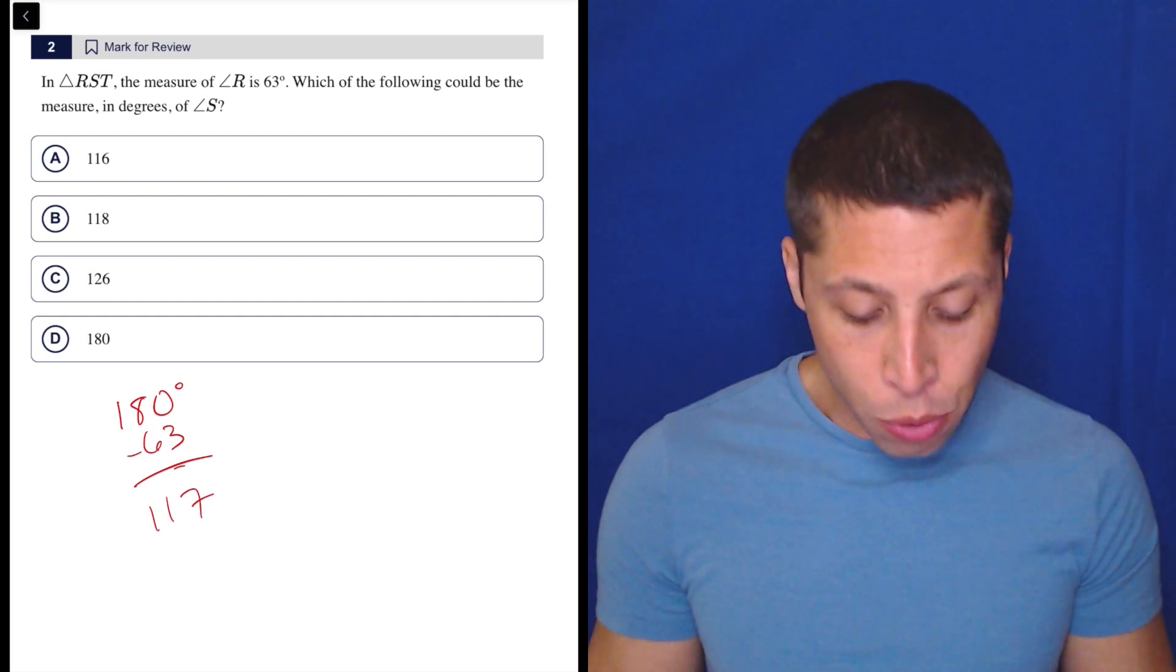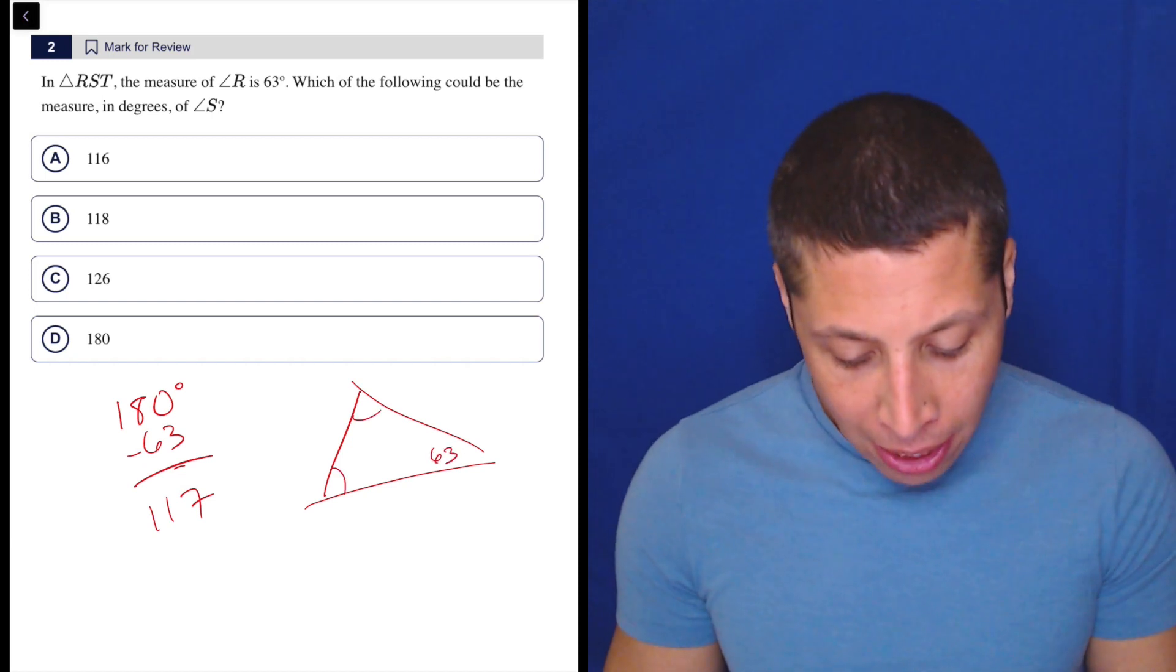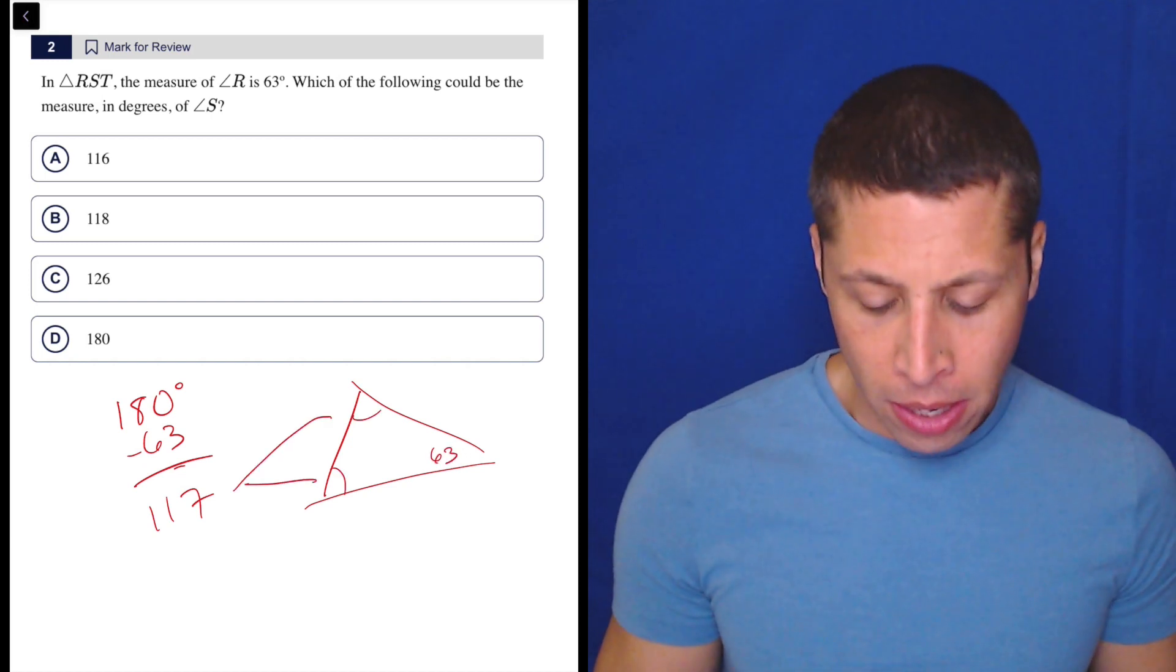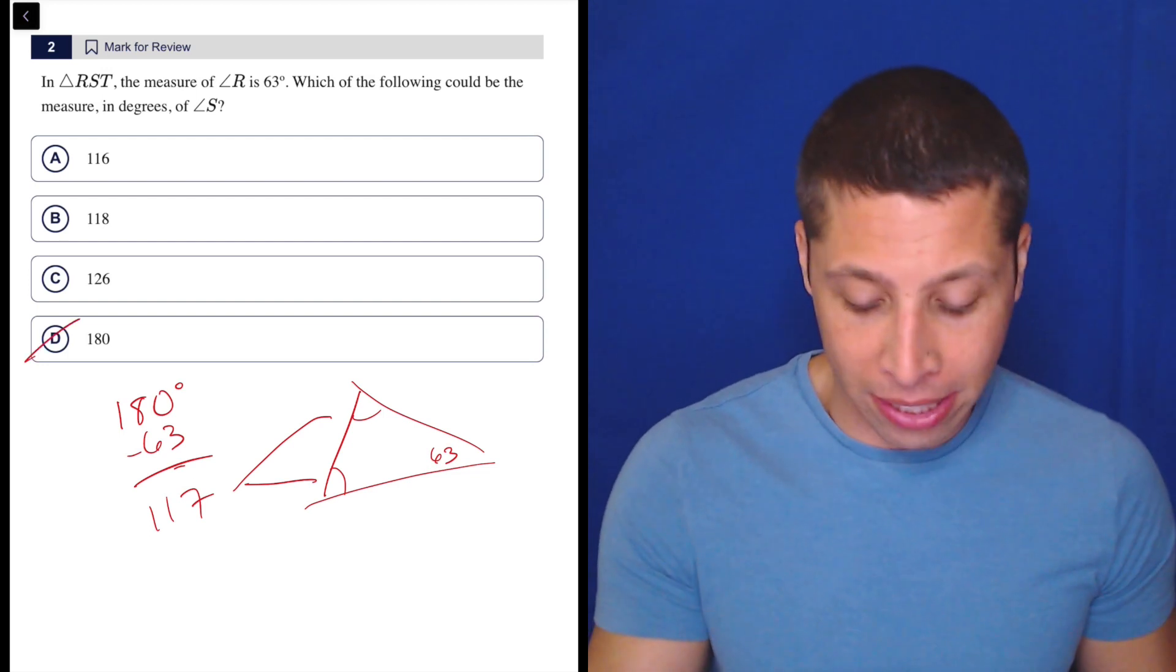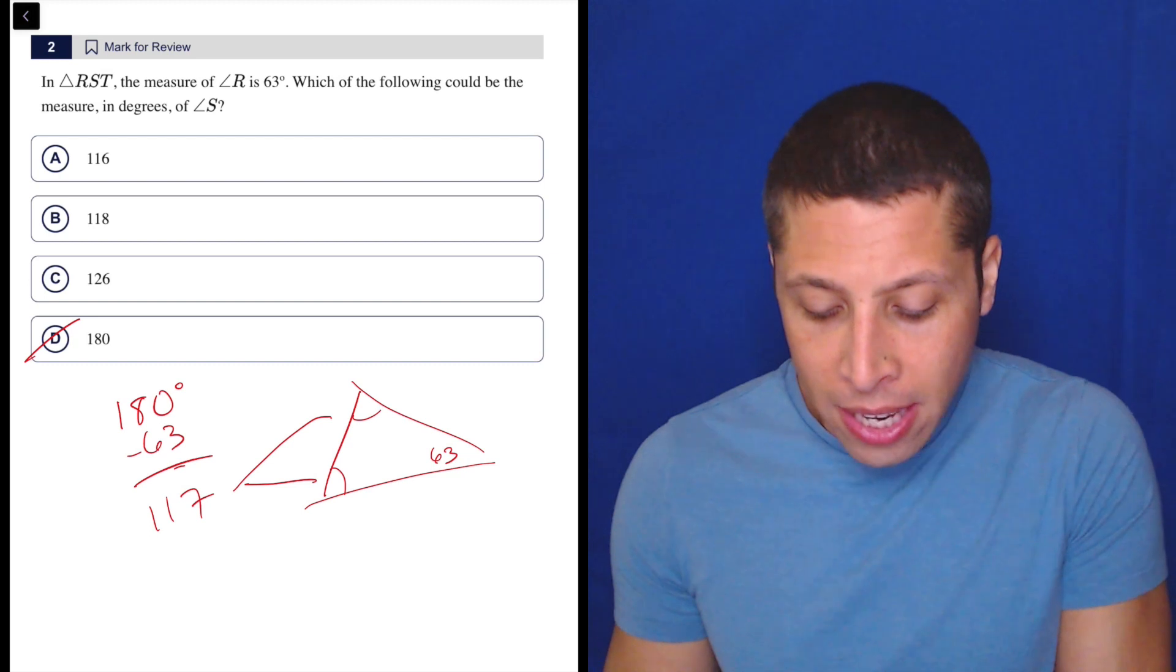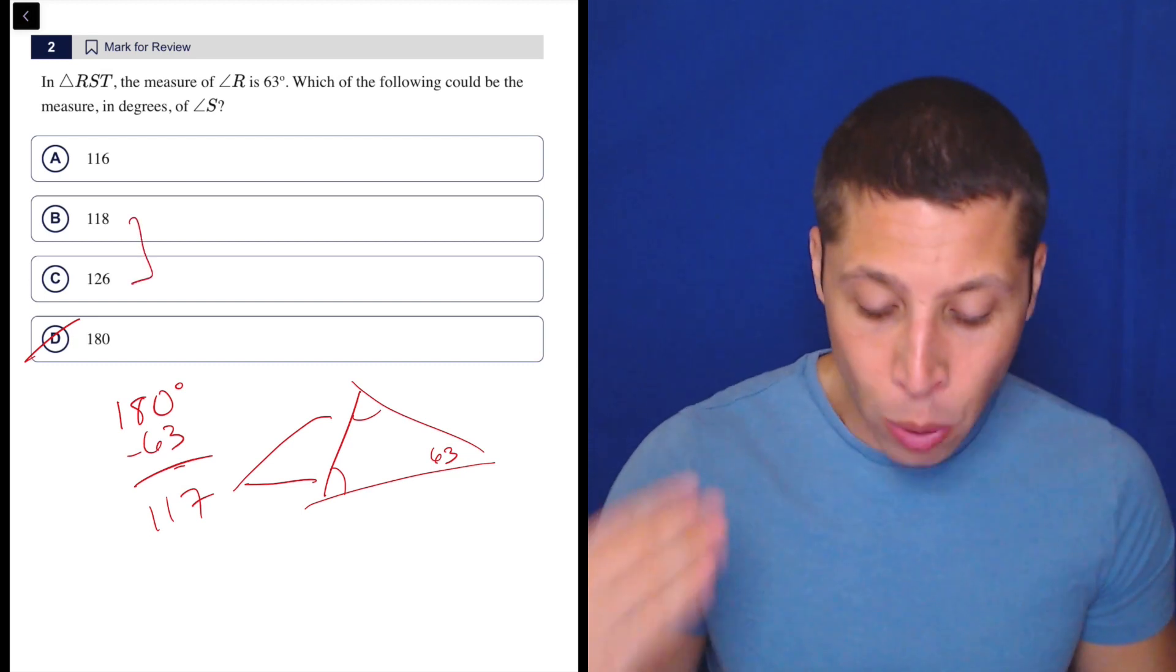So what that means is that there are two angles left in this triangle that have to add up to 117. So that just means that first of all, we could never have one angle be 180 degrees—that doesn't make any sense.